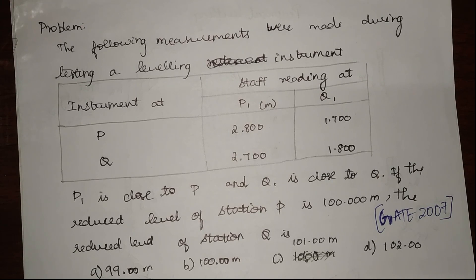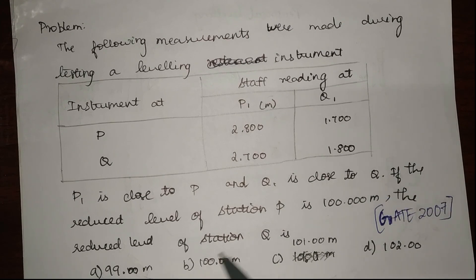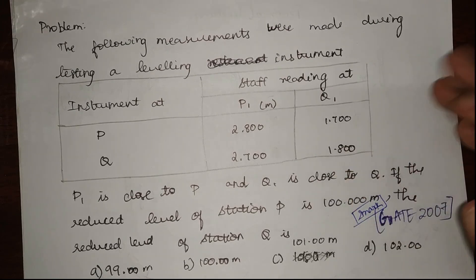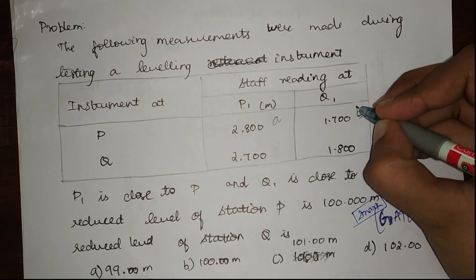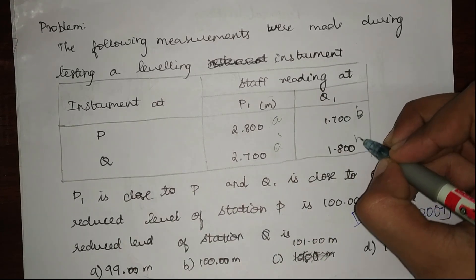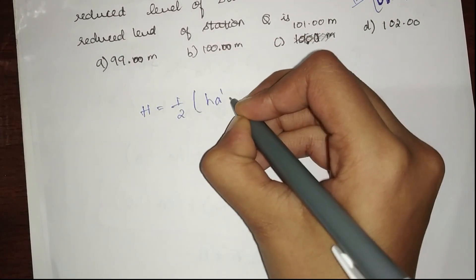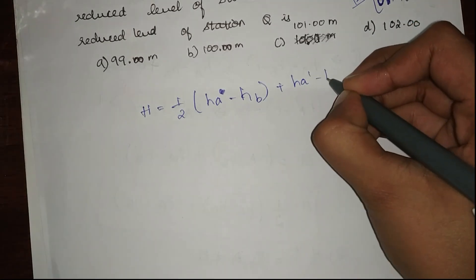Now to understand this better, let us look into a problem. This problem was asked in GATE 2007. The problem goes: the following measurements were made during testing of a leveling instrument at P and Q. Staff readings at P and Q — the values are given: p1 is close to P, q1 is close to Q. If the reduced level of station P is 100 meters, the reduced level of station Q is how much? Options are given. It is simply formula substitution. Since we know the RL of P, the staff reading notations will be a and b; we don't know Q so it has dash notation.